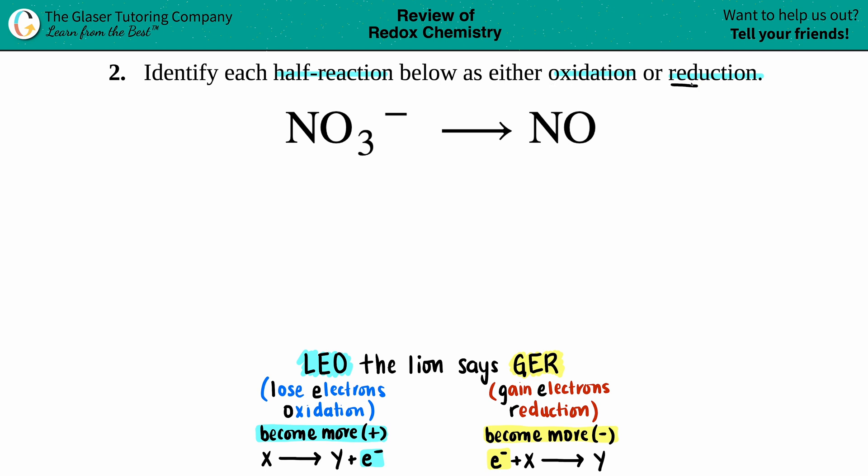Redox, R-E-D-O-X, is literally just the word reduction and oxidation smushed together. We always think of the mnemonic LEO the lion says GER. It's just an easy way to remember what's going on with oxidation and reduction.